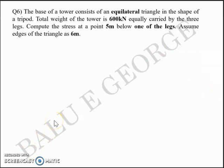Next question. The base of a tower consists of an equilateral triangle in the shape of a tripod. The total weight of the tower is 600kN equally carried by the three legs. Compute the stress at a point 5m below one of the legs. Assume the edges of the triangle are 6m.